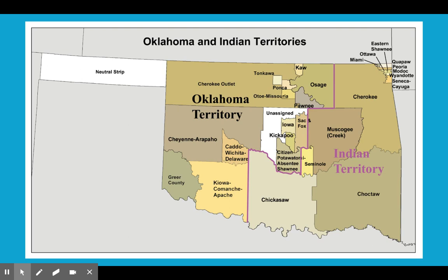Oklahoma Territory has a lot of the Plains tribes that we've researched this semester: the Kiowa, the Cato, the Wichita, the Comanche, the Apache, the Osage, the Sock and Fox, the Kickapoo, just to name a few.